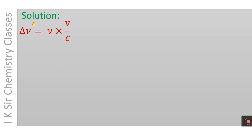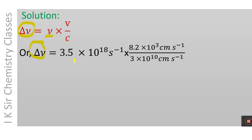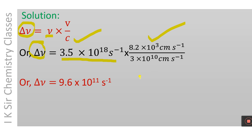Here is the solution. The Doppler shift Δν = ν × (v/c). The frequency of the radiation is 3.5×10¹⁸ per second, the recoil velocity is 8.2×10³ cm/s, and the velocity of radiation is 3×10¹⁰ cm/s. Solving this equation, the Doppler shift comes to be 9.6×10¹¹ per second, approximately equal to 10¹² per second.